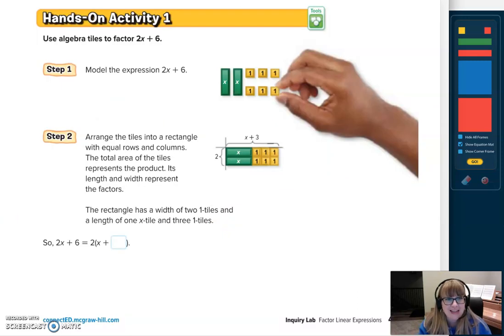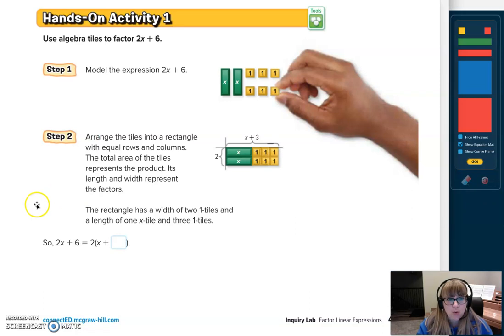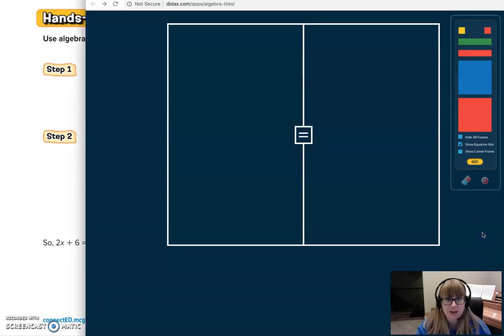We start with the hands-on activity where we have algebra tiles. That's why in the lesson, I included algebra tiles that you can print, color, and cut out, or you can just go back to our virtual online algebra tiles. So what we're being asked to do, it says we need to use these algebra tiles to factor 2x plus 6. What that's saying is this 2x plus 6, that's our area. So we need to get out those tiles. You can see we've got our 2x plus 6 tiles here.